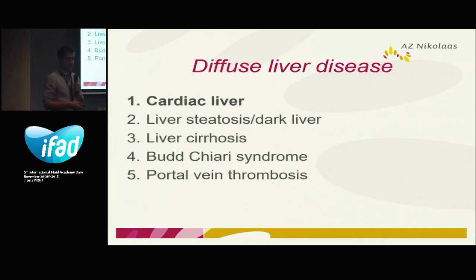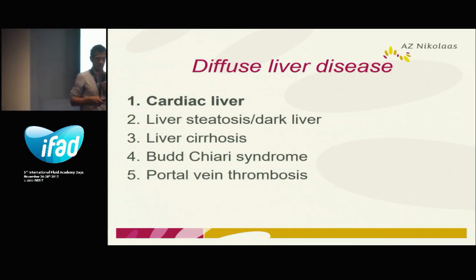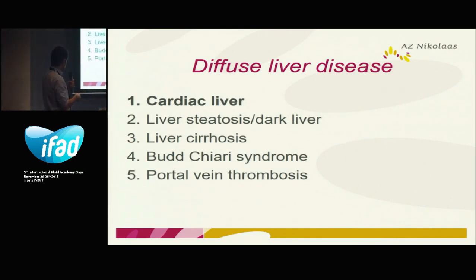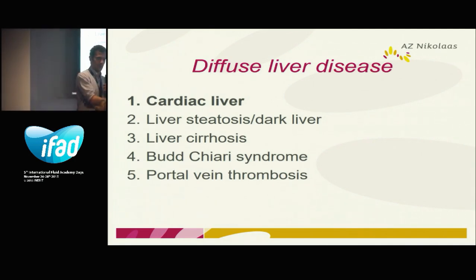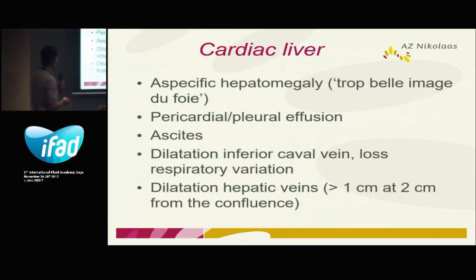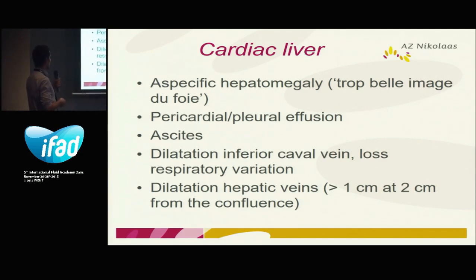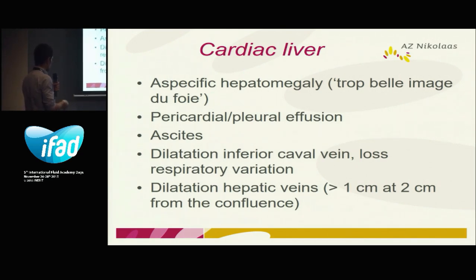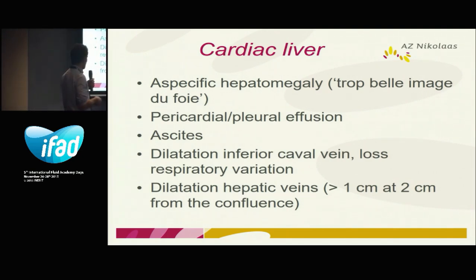First, liver disease. Liver disease is obviously very diverse. We'll start with the cardiac liver — what can you appreciate with abdominal ultrasound if you have cardiac failure? The specific signs include: the liver will be enlarged, we have pleural effusion, and we can see ascites. The two most important findings are dilatation of the hepatic veins and dilatation of the inferior caval vein.